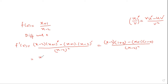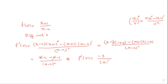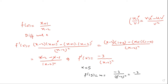Simplifying: we get (x-2) times one minus (x+1) times one, over (x-2) squared. Expanding the numerator: x minus 2 minus x minus 1 equals -3. So f prime of x equals -3 over (x-2) squared. Plugging in x equals five: f prime of 5) equals -3 over (5-2) squared equals -3 over 9, which is -1/3. This is the slope of the function at x equals five.